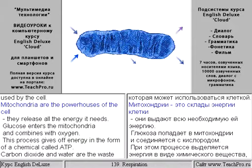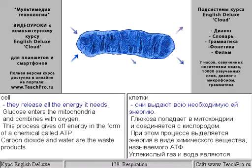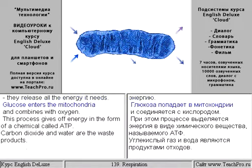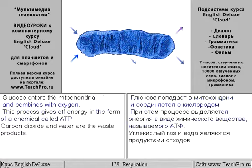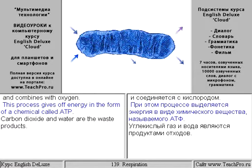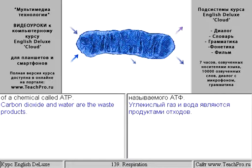Mitochondria are the powerhouses of the cell. They release all the energy it needs. Glucose enters the mitochondria and combines with oxygen. This process gives off energy in the form of a chemical called ATP. Carbon dioxide and water are the waste products.